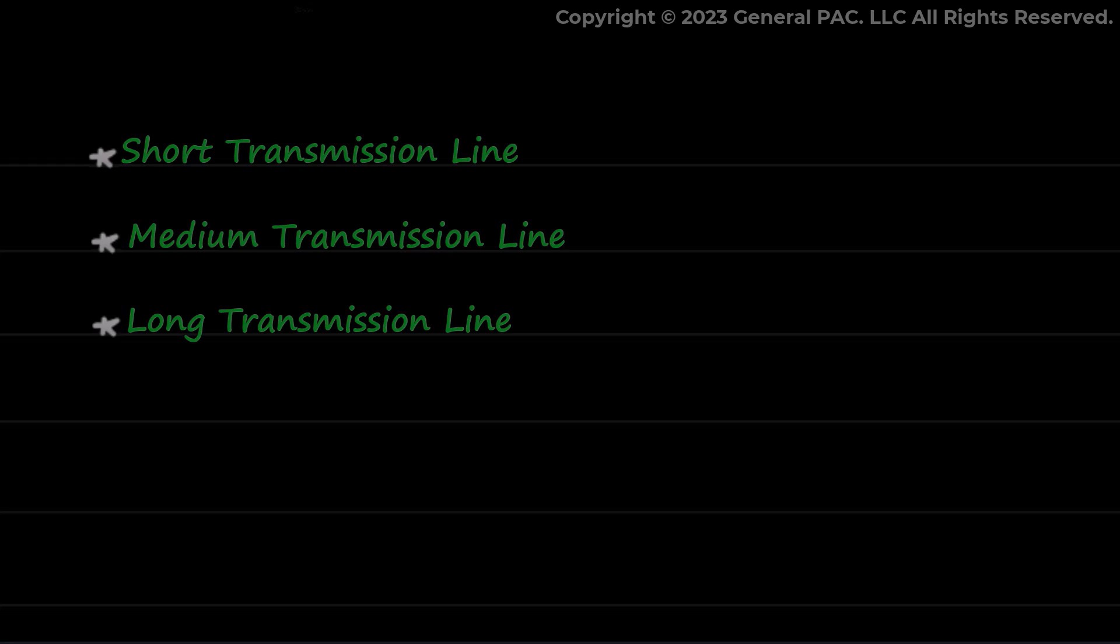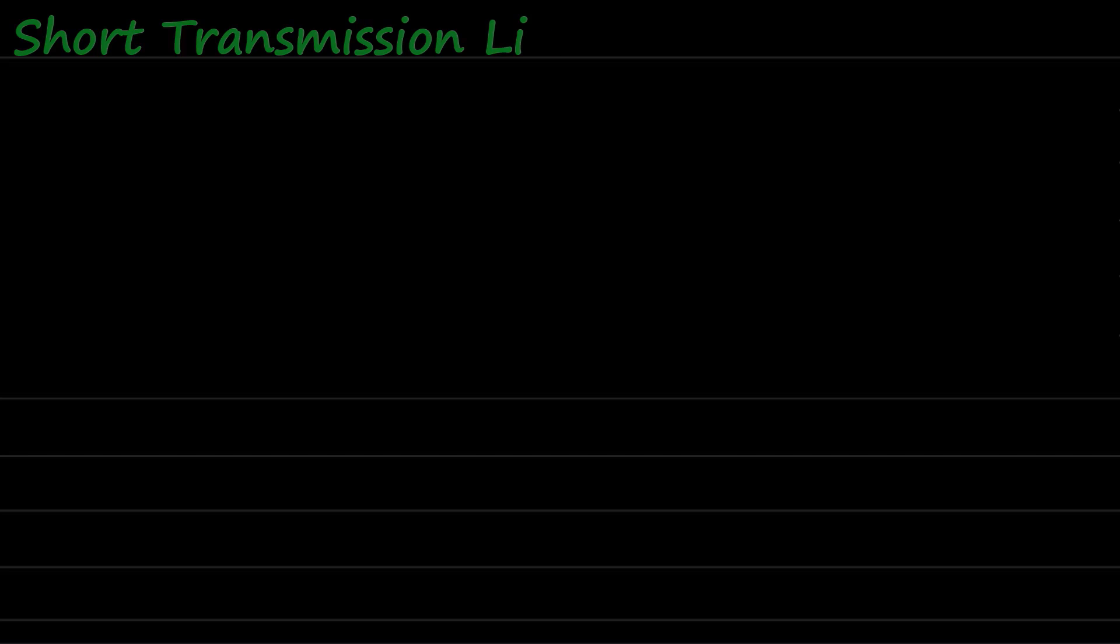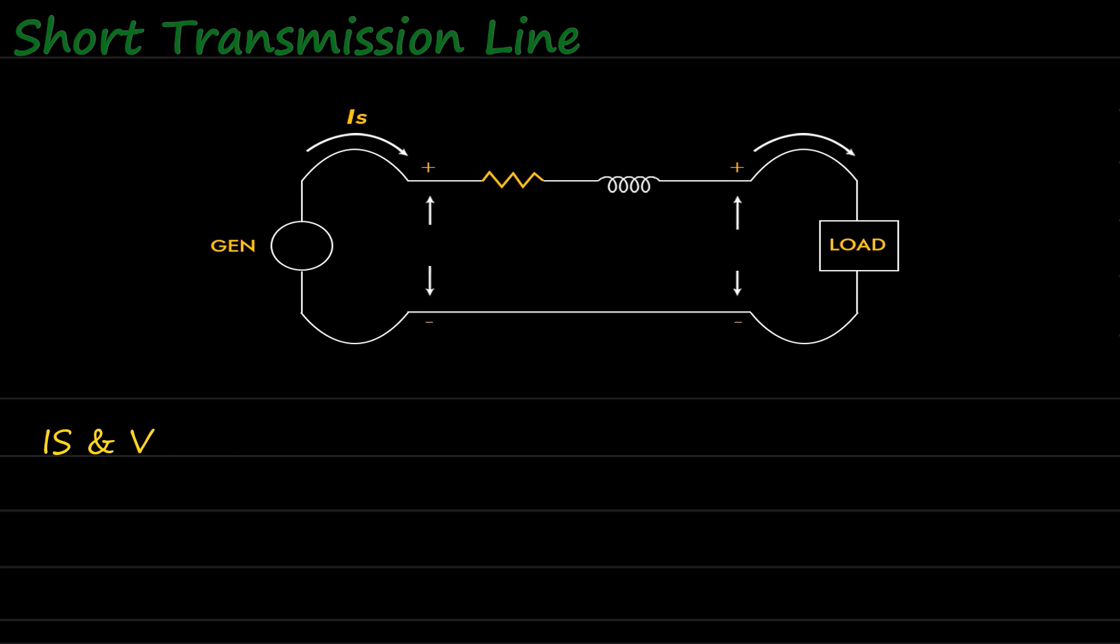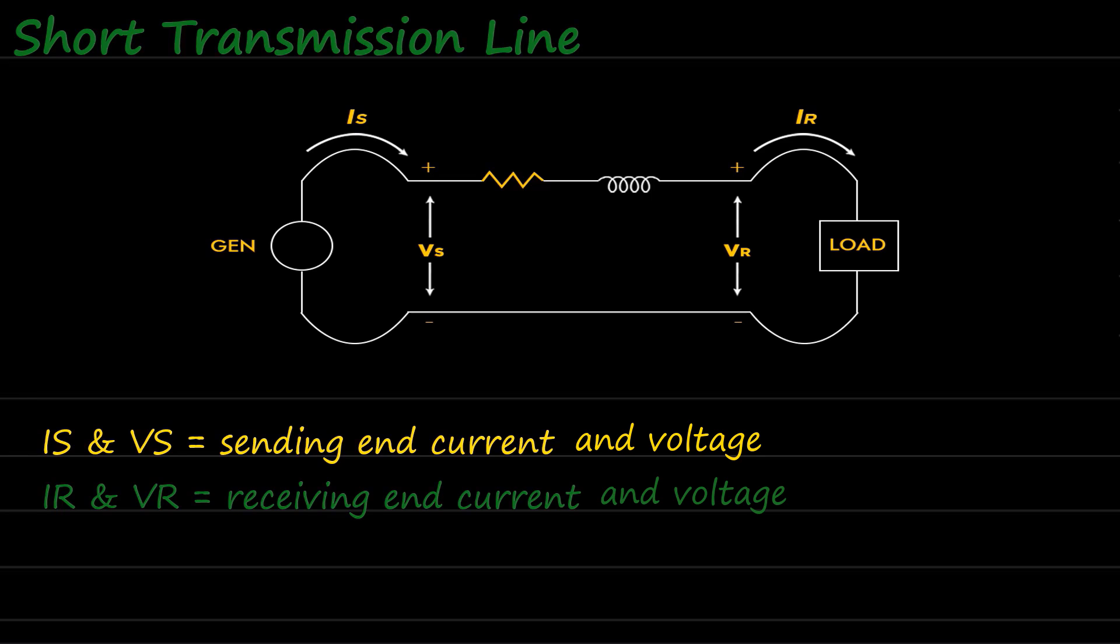We shall start our discussion from short transmission line. The diagram here represents a short transmission line which connects a generator and load. Here IS and VS are the sending end current and voltage, while IR and VR are receiving end current and voltage, respectively.